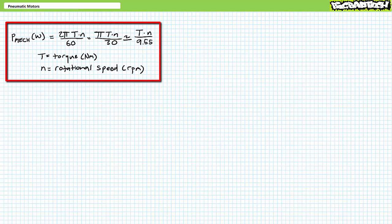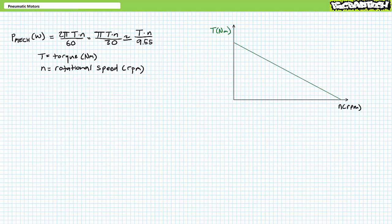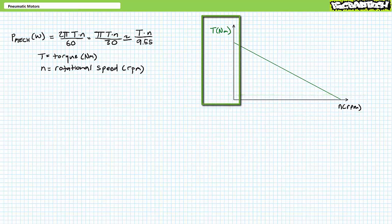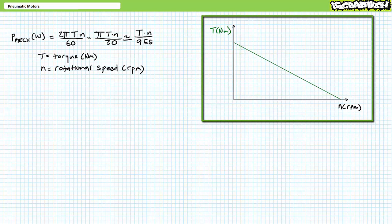Alternatively, you might see this written as two pi times torque times speed over 60, or pi times speed times torque over 30, where 9.55 is a rough approximation for this unit conversion constant. One illustrates the performance of rotational actuators like air motors using a speed-torque curve, with rotational speed in units of RPM on the horizontal axis and torque in units of newton meters on the vertical axis.